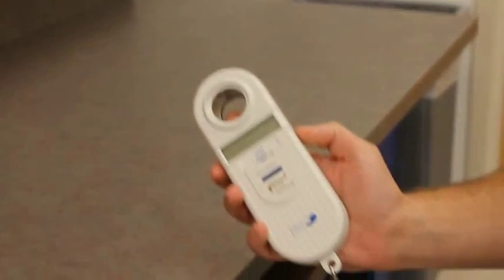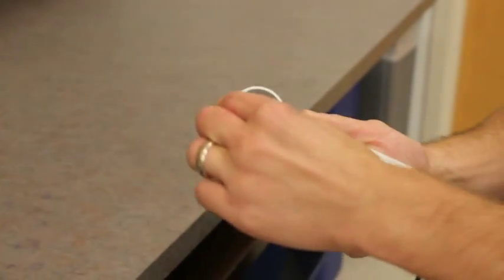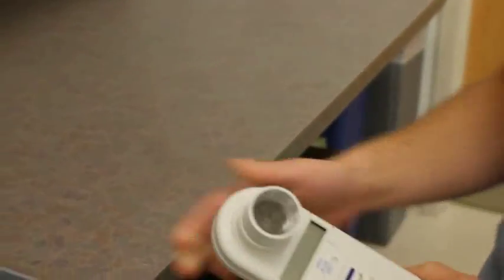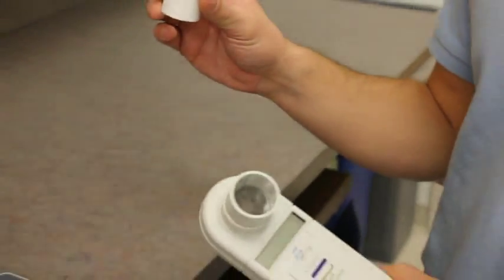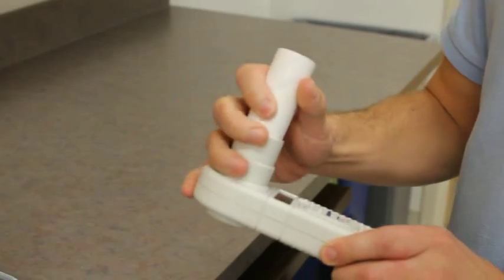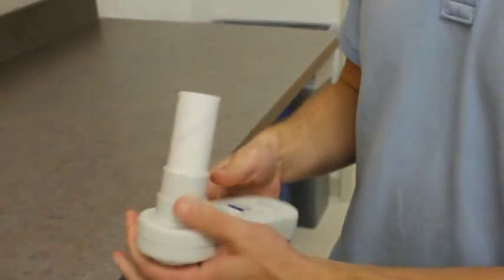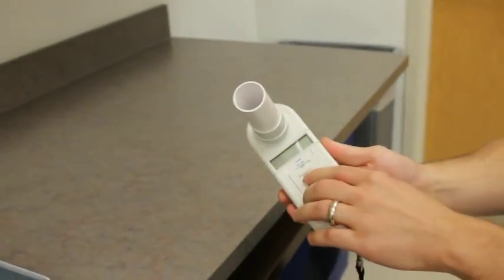Then you take the mouthpiece and that just fits in there and slides in. Okay, and then there's three menu options: off, blow, and view. So you just want to switch from off to blow.